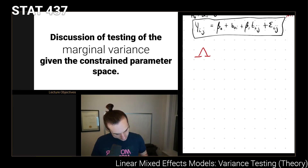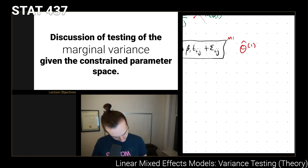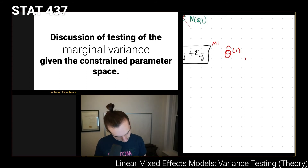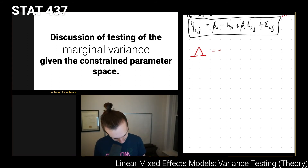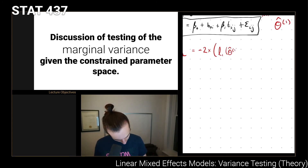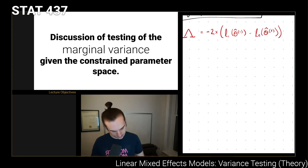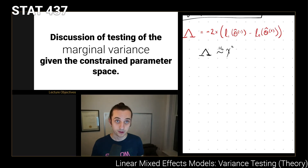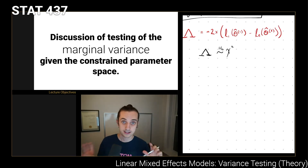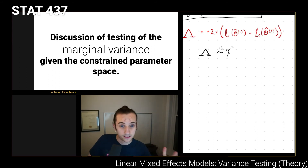We can apply a likelihood ratio procedure. Call the smaller model Model 1 and the full model Model 2, estimate the maximum likelihoods theta-hat_1 and theta-hat_2 respectively, and define the test statistic as negative 2 times the difference in log likelihoods — the log likelihood of the smaller model minus the log likelihood of the larger model. Under standard asymptotic theory this would be distributed as chi-squared, with degrees of freedom equal to the difference in number of parameters.